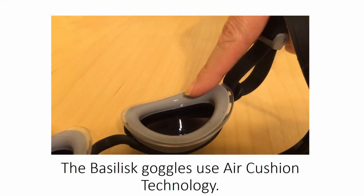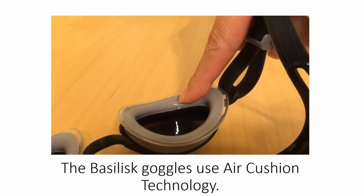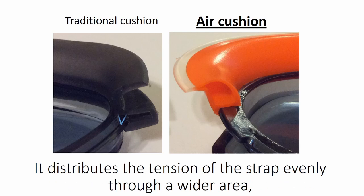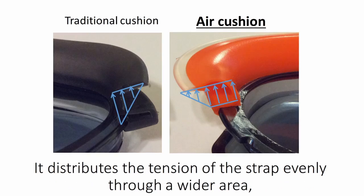The Basilisk Goggles use air cushion technology. While traditional cushions have a single wall, the air cushion gasket is double walled. It distributes the tension of the strap evenly through a wider area.